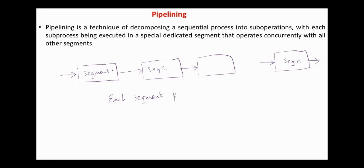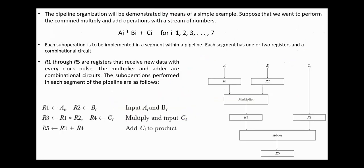Each segment performs partial processing dictated by the way the task is partitioned. The result from each segment is transferred to the next segment and the final result is obtained from the last segment. The use of pipeline in computers is similar to the use of assembly line in industry. The pipeline organization will be demonstrated by means of a simple example.